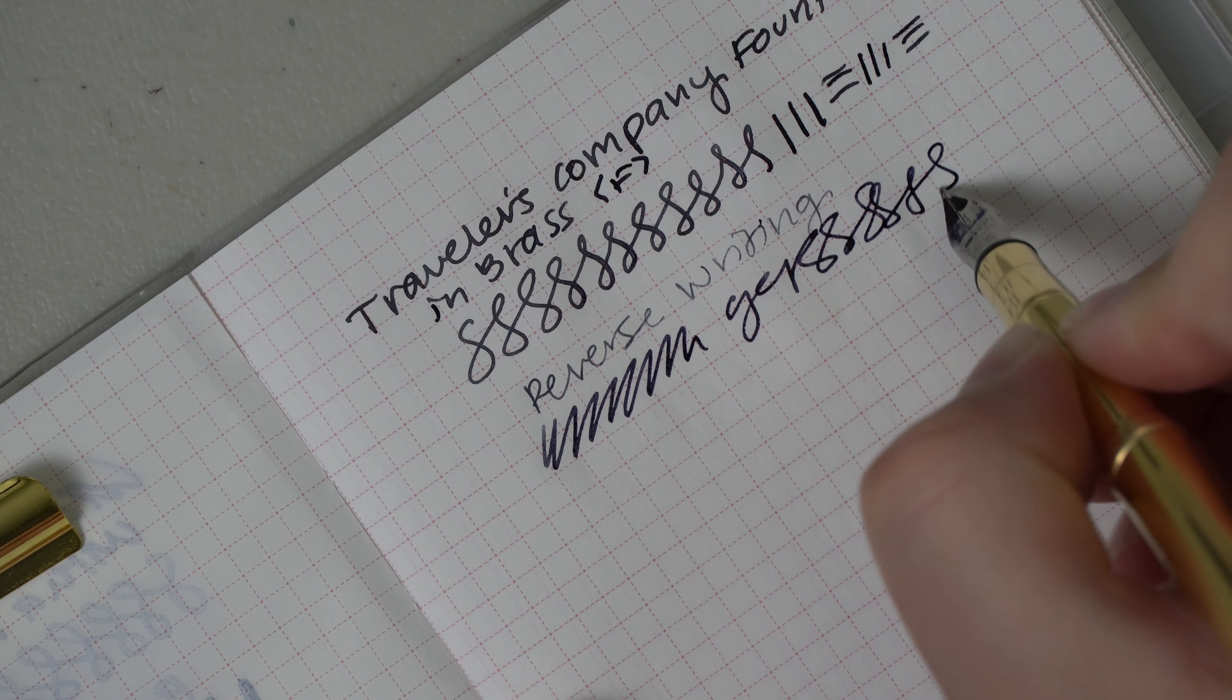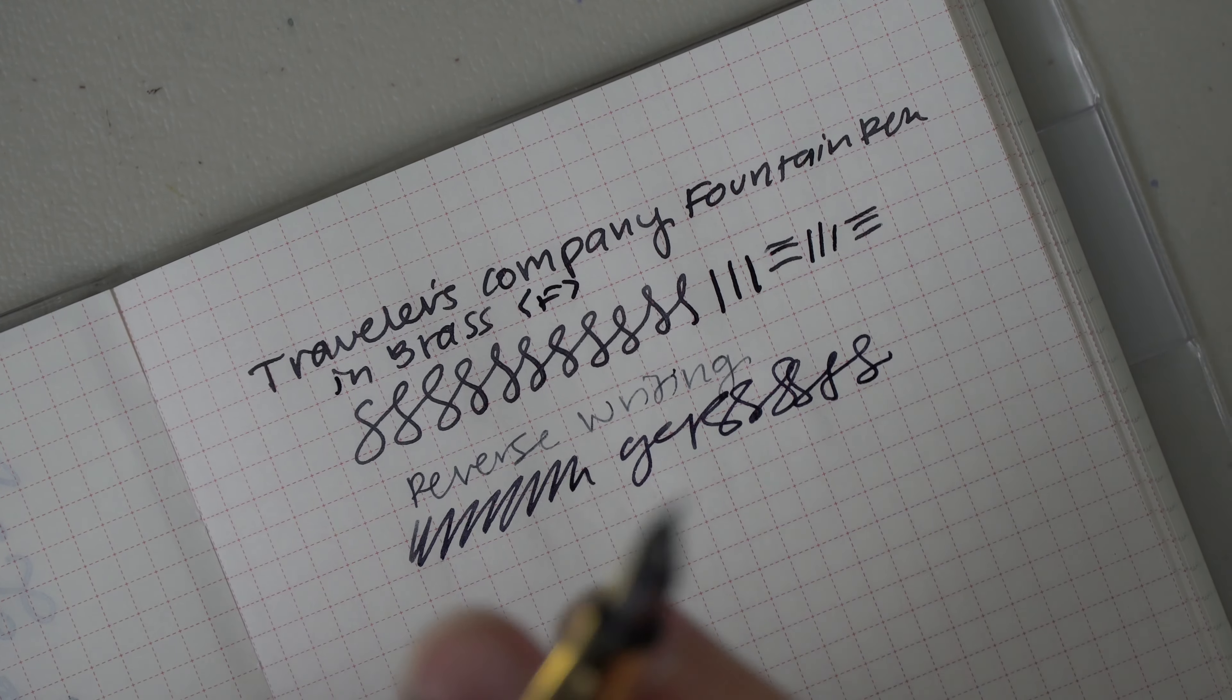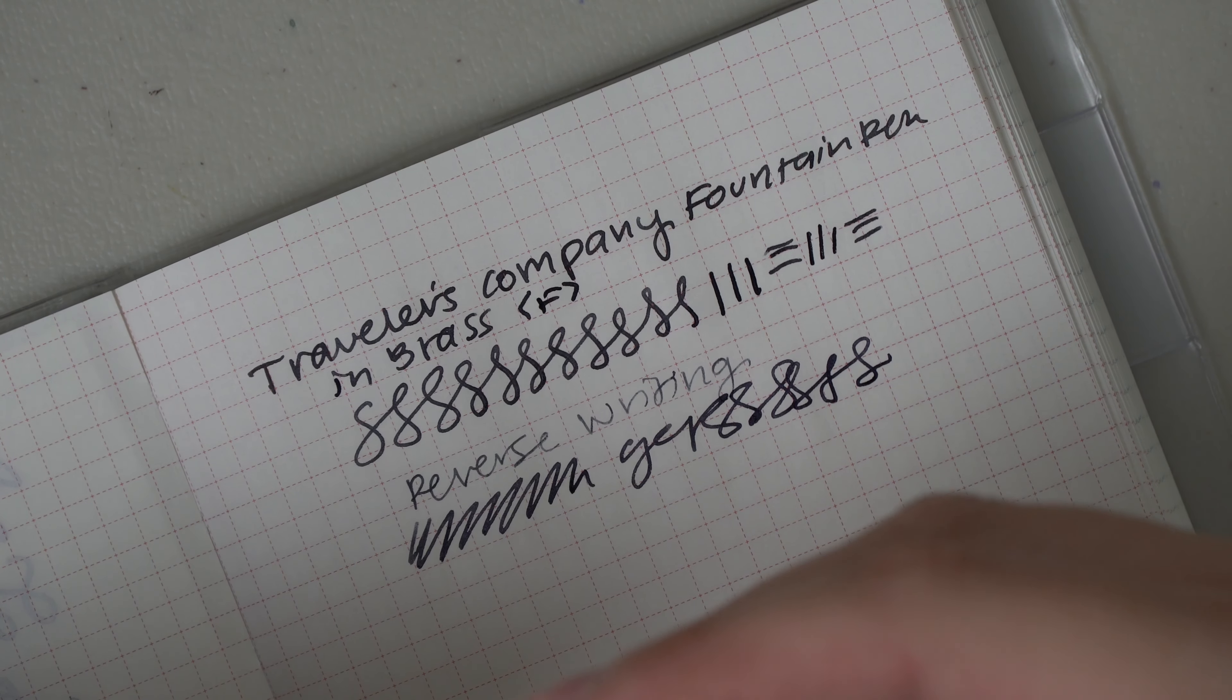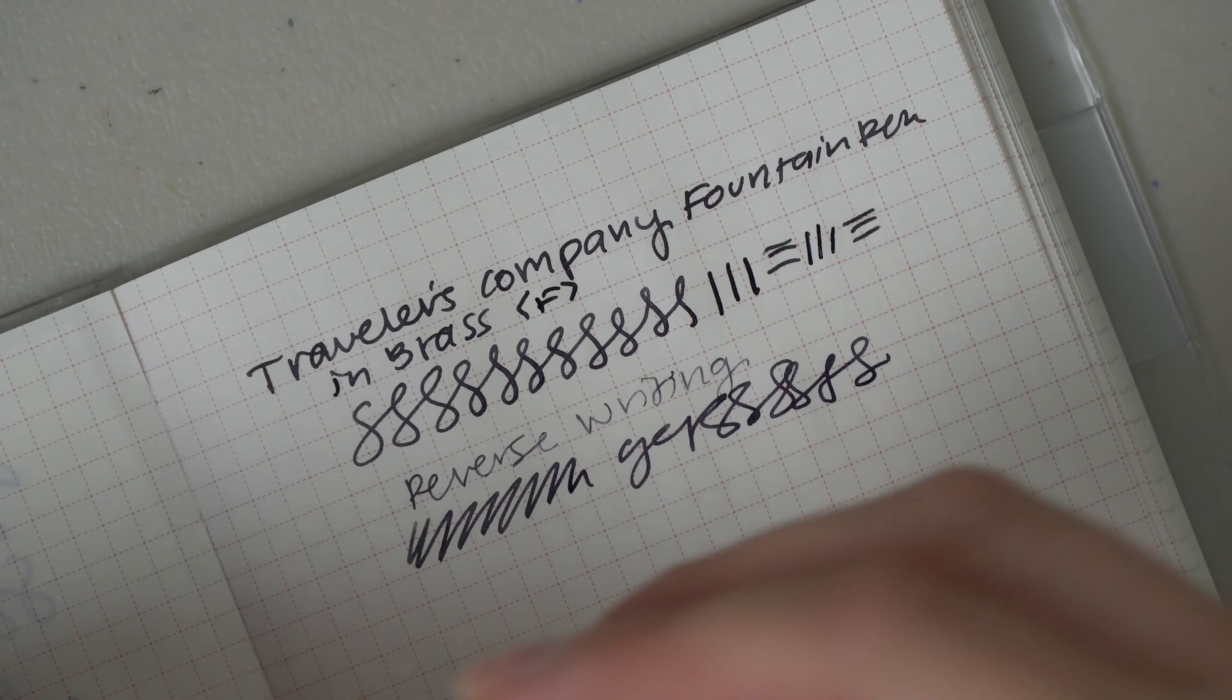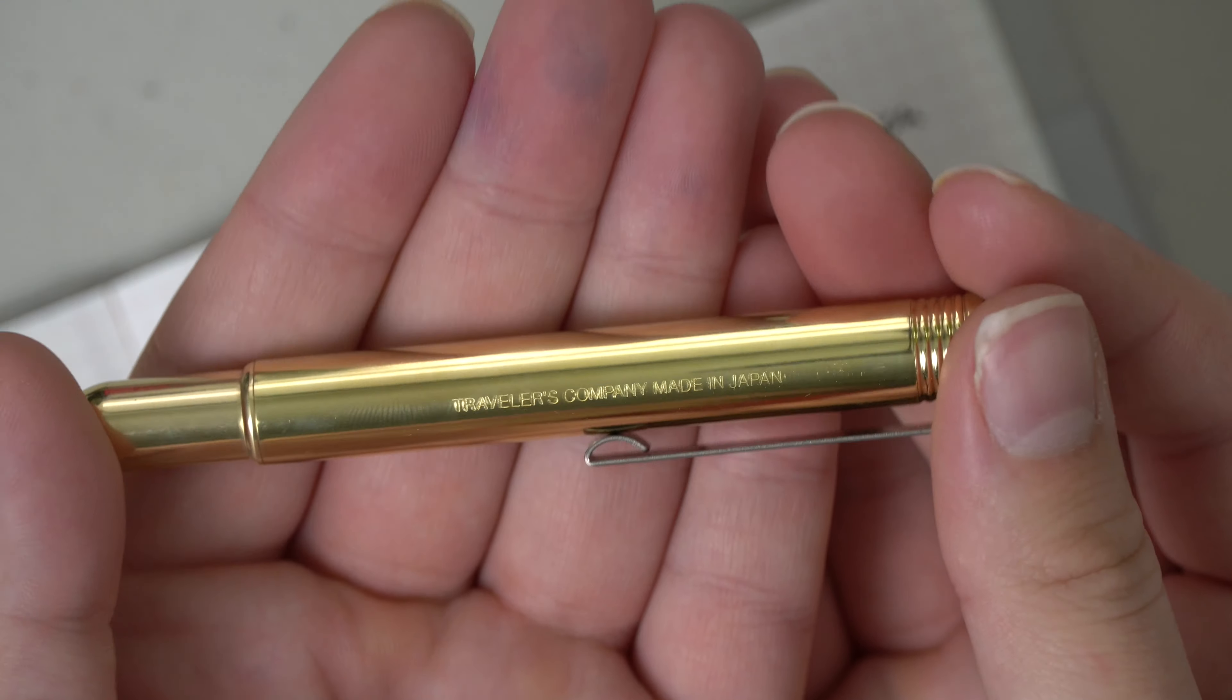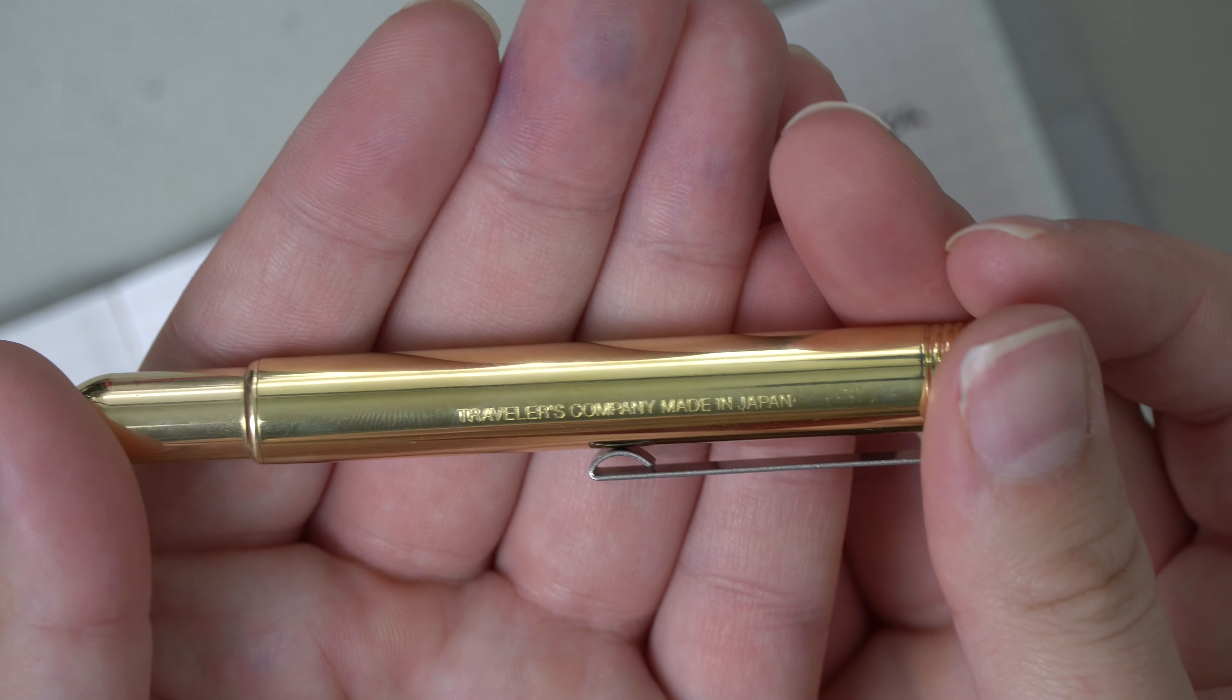So if you wanted to travel with this bad boy, this would be a good choice. I mean, it would probably take the path of least resistance because it is metal, but very nice. It does also have the Traveler's Company Made in Japan engraving on it that I just noticed.